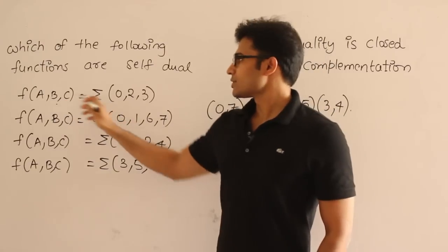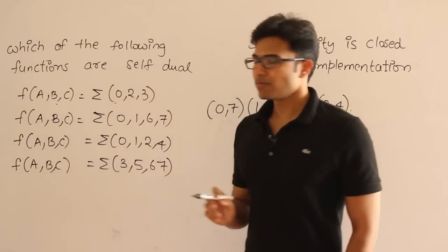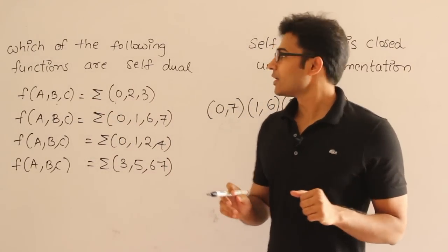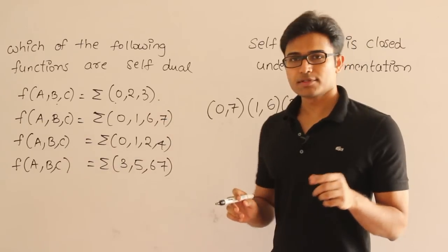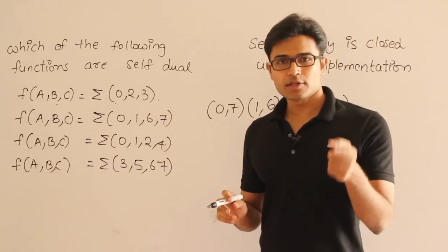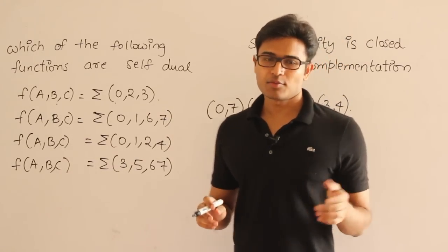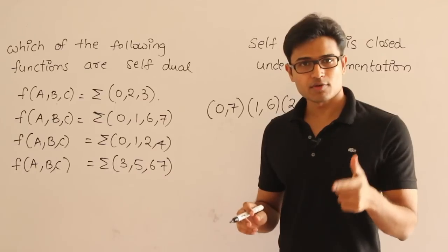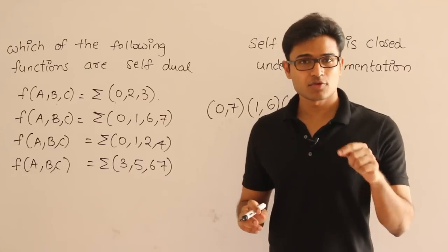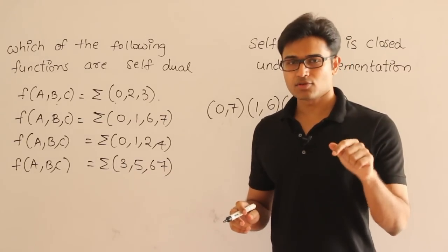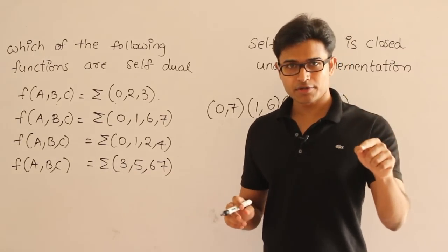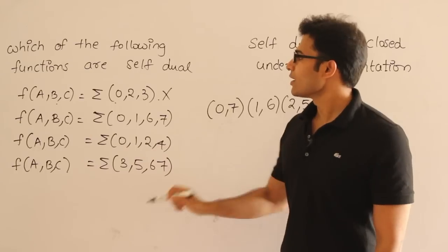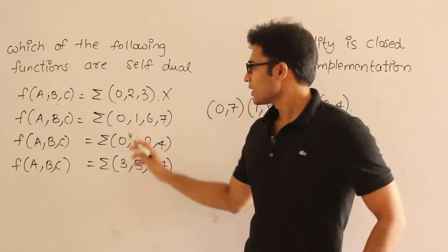The first option is definitely not a self-dual function. Why? If you look at the number of minterms, there are 3, and the number of maxterms is obviously 5. Since minterms ≠ maxterms, it is not a neutral function. Every self-dual function must be a neutral function, so it is not the answer.